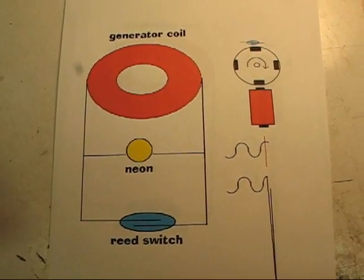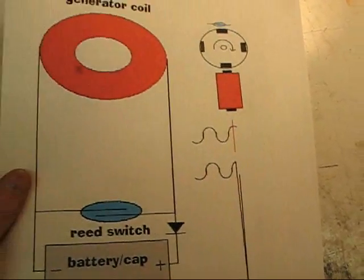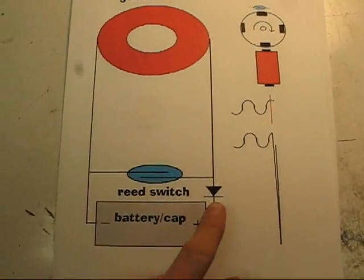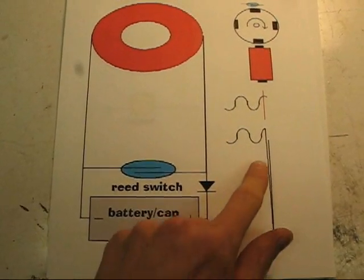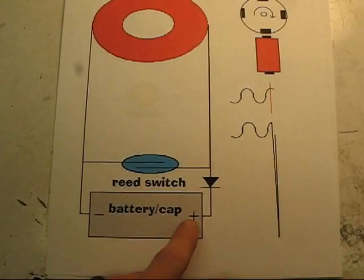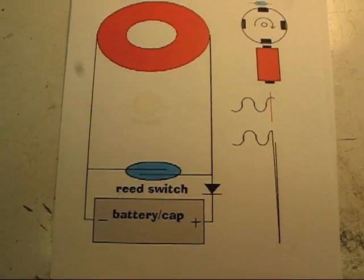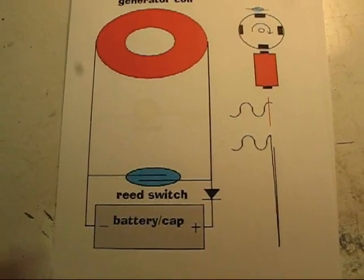A very basic technique to actually apply this to use it for something would be to use a diode to direct that big spike into the positive side of a battery, or a capacitor, or any other load you wish.